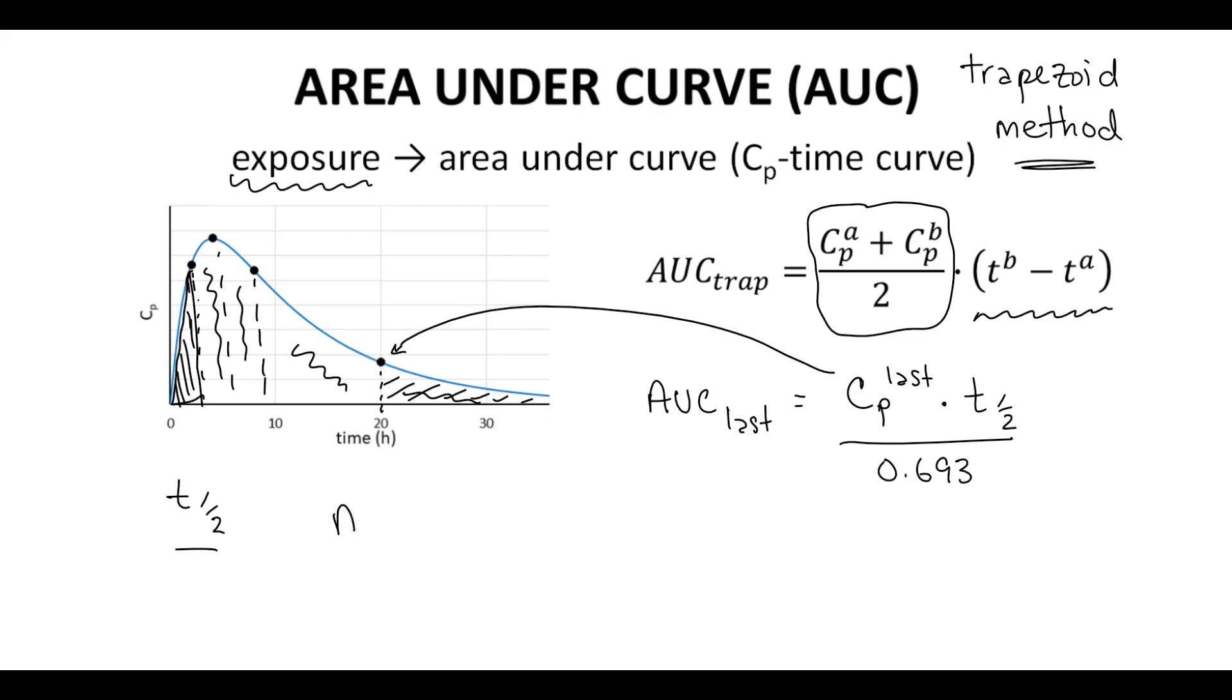The units for AUC are mass times time divided by volume. So if CP has units of micrograms per liter and time is in hours, then AUC is microgram hours per liter.